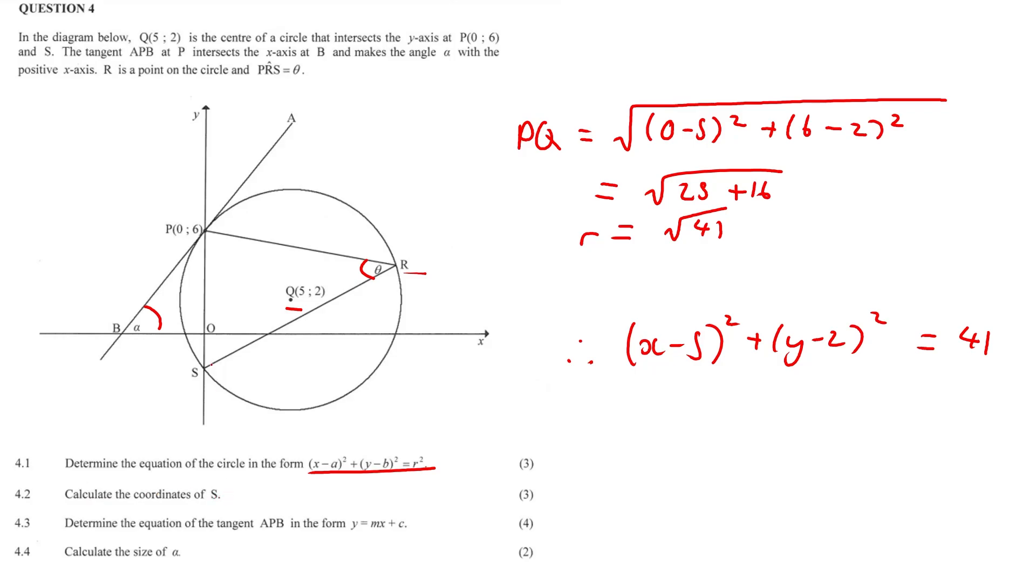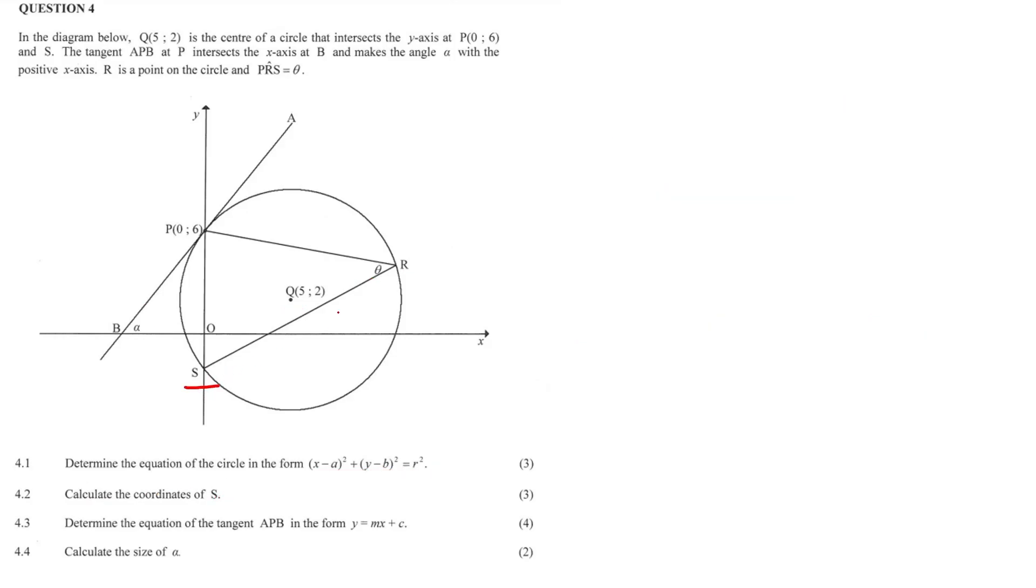4.2, calculate the coordinates of S. We need to understand that S is on the Y intercept. So we're going to use the equation of our circle, and we're just going to sub in x equals 0, because at x equals 0 a Y intercept exists. So let's sub it in. 0 minus 5 squared plus y minus 2 squared is equal to 41.